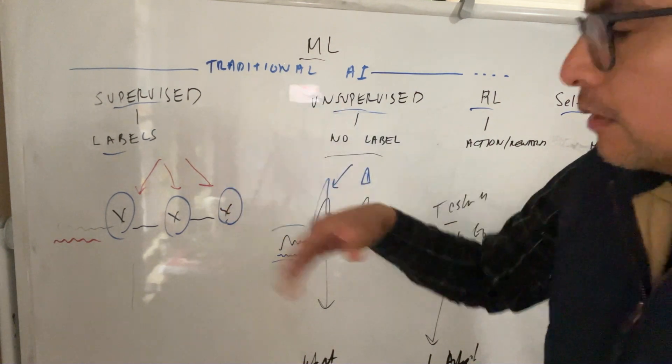And again, just to recap, we have traditional AI methods, supervised learning, unsupervised learning. Here we have labels. We don't have any labels. Here we're looking to predict certain things. We're forecasting. Here we're looking for patterns. We're looking for anomalies. We're looking for clusters.